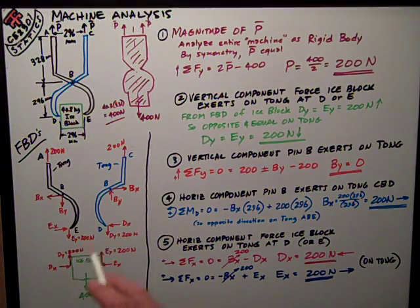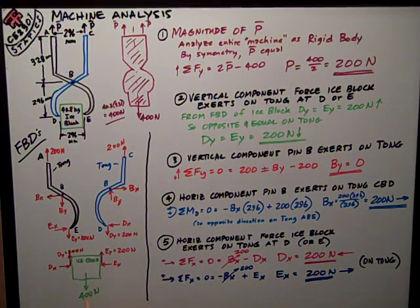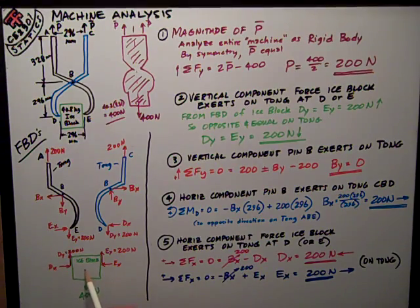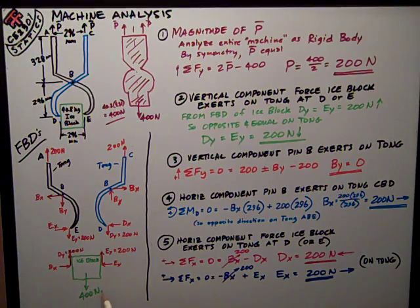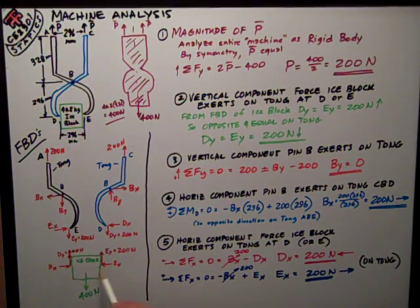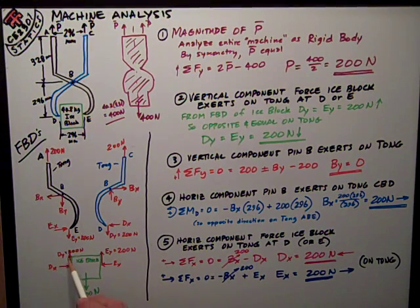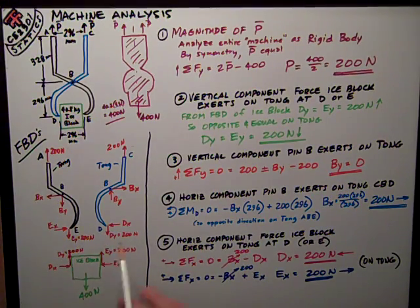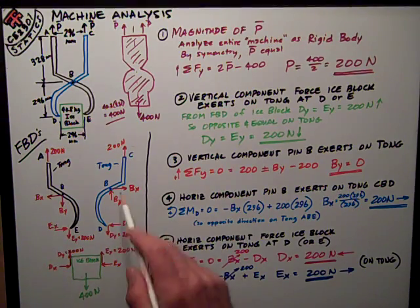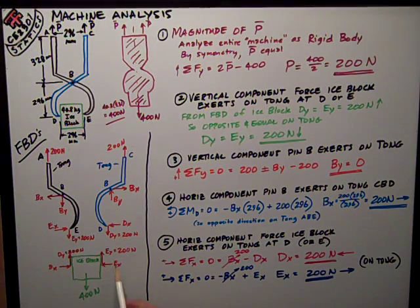I use Newton's third law and assume equal and opposite reactions on all the pieces. So I start kind of down here at the ice block, because I know that it weighs, or its force is 400 newtons. And so I want to assume forces on it, exerted by the tongs, and on each side I have an upward force, dy or ey. Notice how it's kind of inverted because of the way the tongs geometry works. But anyway, so I got dy, dx, and dy, ey, and ex.